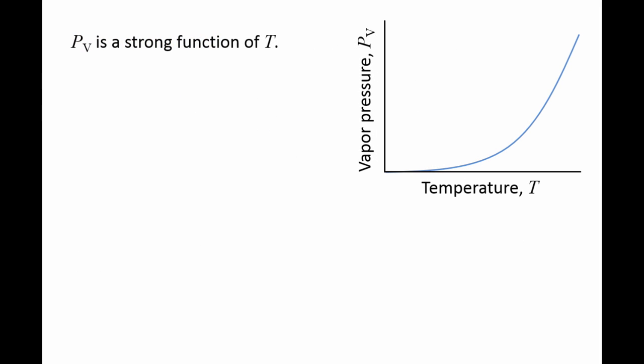The vapor pressure is a strong function of temperature. For example, for water at 20 degrees Celsius, the vapor pressure is 2.3 × 10³ Pascals. If water is heated to 100 degrees Celsius, the vapor pressure increases to 1 atm, or 1.013 × 10⁵ Pascals.